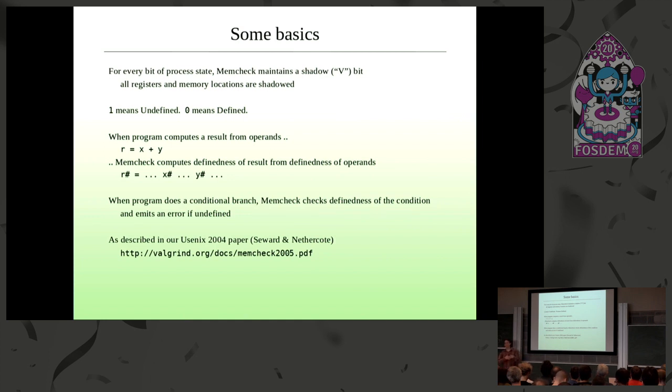And mostly, it just follows definedness through the program. But that only works until you get to some particular places where you really have to report an error if there's something undefined. So those places are basically when you do a conditional branch. That's the case that's important today. It also checks for undefined values in addresses because that's obviously bad, loading from unknown addresses. And if you want to read more about the gory details, there's this paper which you can basically explain to it. It's a bit old, but you get the general idea from that.